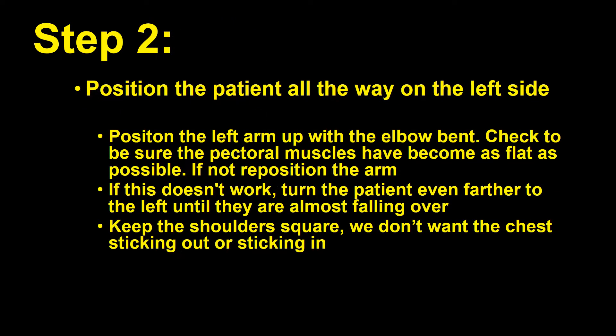Step two: position the patient all the way on the left side. Position the left arm up with the elbow bent. Check to be sure that the pectoral muscles have become as flat as possible. If not, reposition that left arm until you can feel that the pectoral muscles are all the way flat. If this doesn't work, turn the patient even farther to the left until they're almost falling over. Remember to keep the shoulders square — we don't want the chest sticking out or sticking in. Little kids sometimes like to stick out their chest.